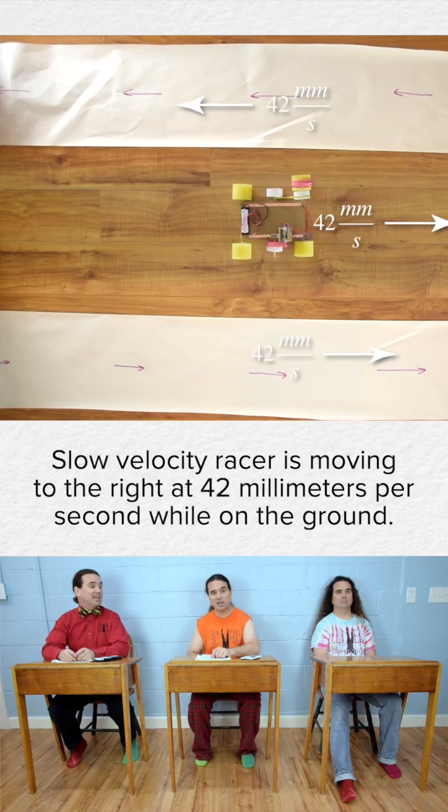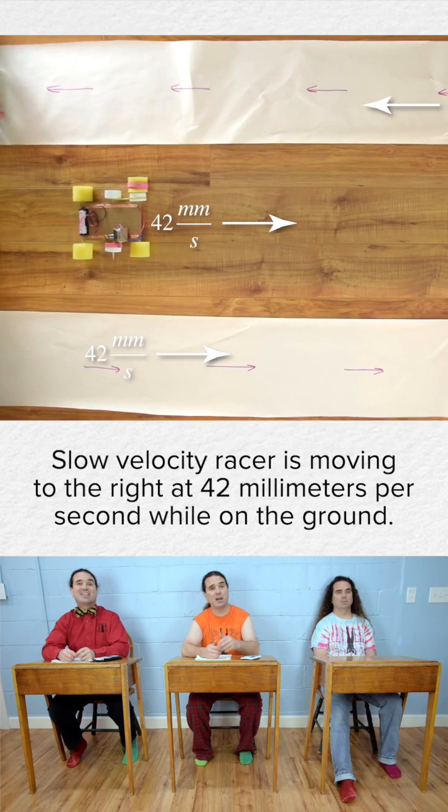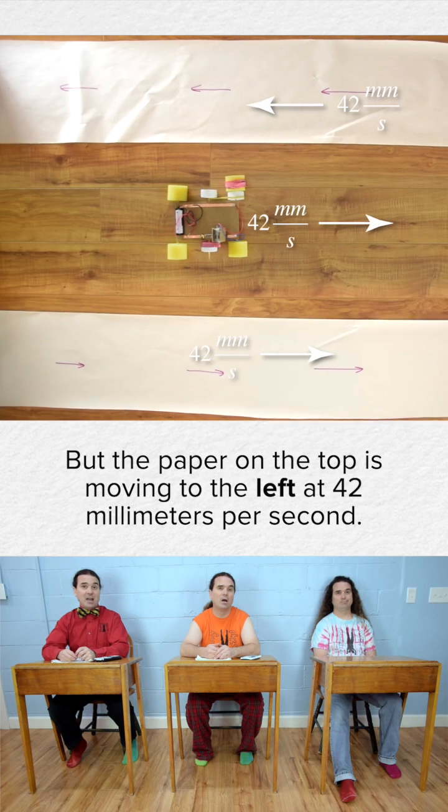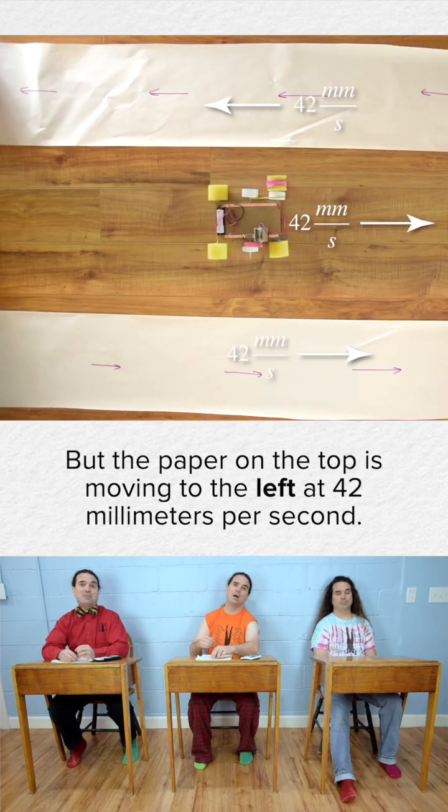Slow Velocity Eraser is moving to the right at 42 millimeters per second while on the ground. The paper on the bottom is also moving to the right at 42 millimeters per second, but the paper on the top is moving to the left at 42 millimeters per second.